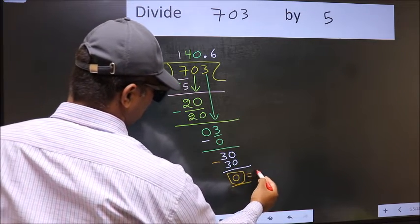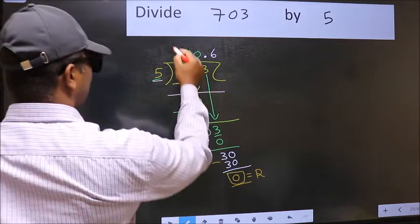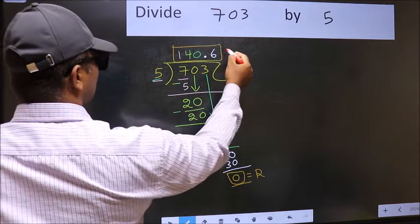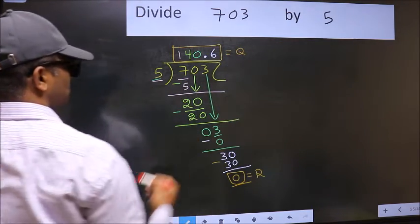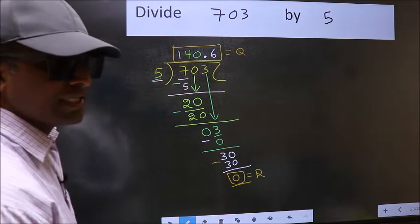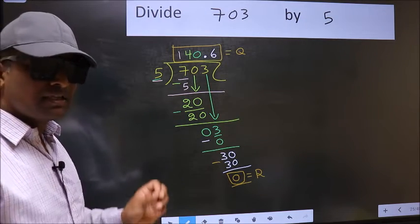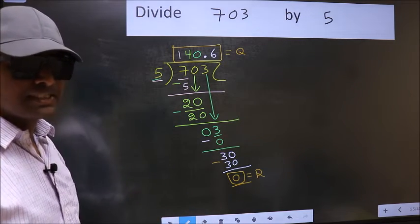So this is our remainder. And this is our quotient. Did you understand where the mistake happens? You should not do that mistake.